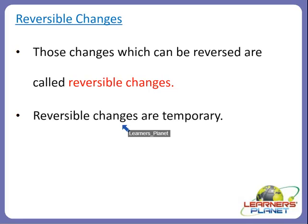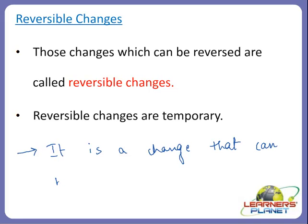A reversible change is a change that can be undone or reversed. A reversible change might change how a material looks, but it doesn't create any new material. Now let us discuss some of the examples and processes which are examples of reversible changes.